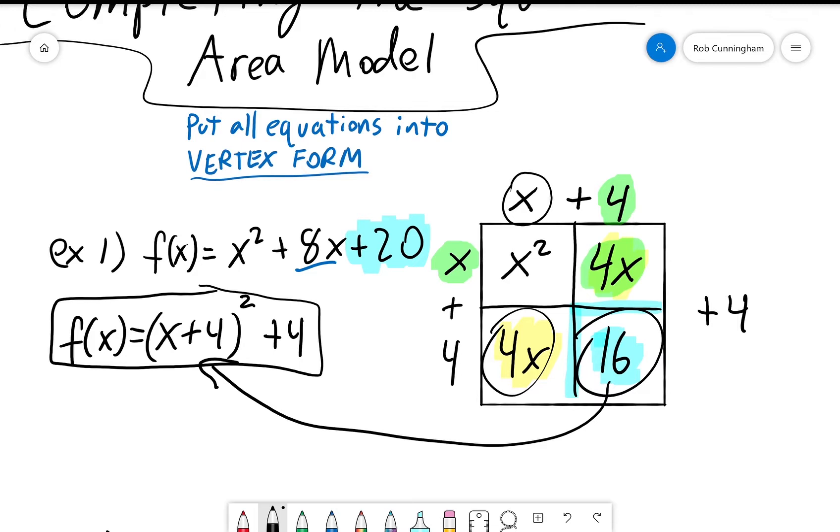So when we are doing this completing the square, we need to figure out what the constant is going to be in order to make a perfect square, and then we have to adjust our equation accordingly. Let's take a look at another example.